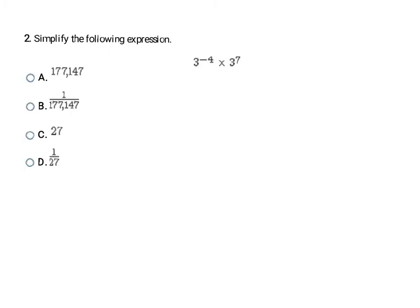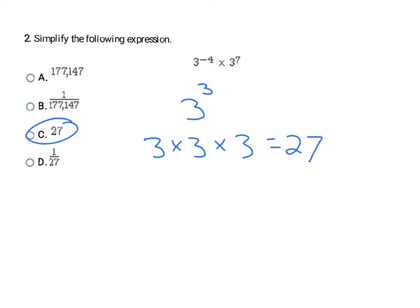Here's another multiplication problem. The base is 3 on both terms, so I add the exponents: negative 4 plus 7 is 3, giving me 3 to the third. That means I take 3 times itself 3 times: 3×3=9, 9×3=27. So 3 cubed is 27, making C the final answer.